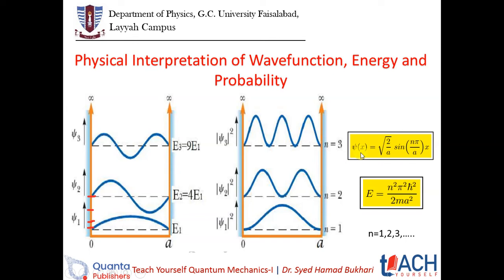Now let's look at the wave function values. When we draw psi 1, we see it has a half-cycle form. For psi 2, when we put n equal to 2, the normalization constant root 2 over a stays fixed, and the factor that changes is the sine function with respect to position x. So when n equals 2, our sine function transforms into two half cycles, which is one complete cycle.